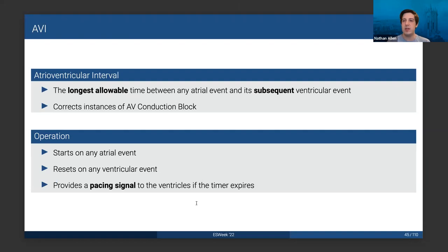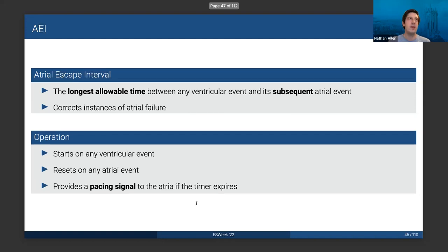PVARP — the postventricular atrial refractory period — is very similar: it starts on a ventricular event, and during that time all atrial signals are ignored and recorded as atrial refractory sense signals. The common reason is crosstalk: the ventricles are large and when they contract, their depolarization is easily picked up by the sensitive atrial lead. AVI starts on an atrial event; if we get a ventricular event, we reset the timer. If the timer expires and URI has also finished, then we issue a ventricular pacing signal — that's the AVI extension. AEI is similar but opposite: starts on a ventricular event, resets on an atrial event, and corrects behaviors like sinoatrial node failure.